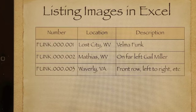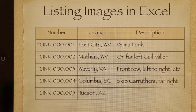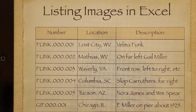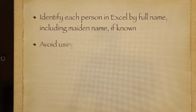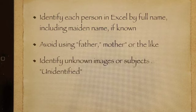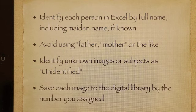Your description will contain any information that you can add that will be interesting to you or any reader. In this last one, I have a different folio number, and I recommend that each folio have its own separate worksheet in your Excel workbook. Identify each person in Excel by full name, including maiden name if known. Avoid using father, mother, or the like. Identify unknown images or subjects as unidentified — I use this to help my search function and find unidentified images that I can review with family members. Save each image to the digital library by the number you assigned.